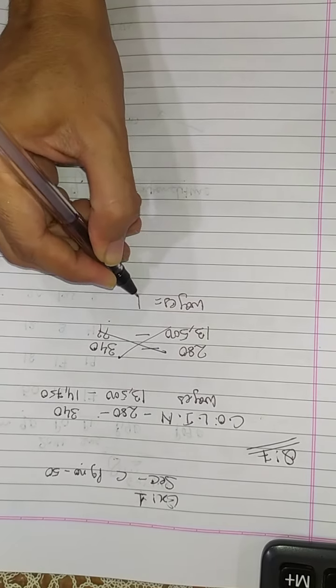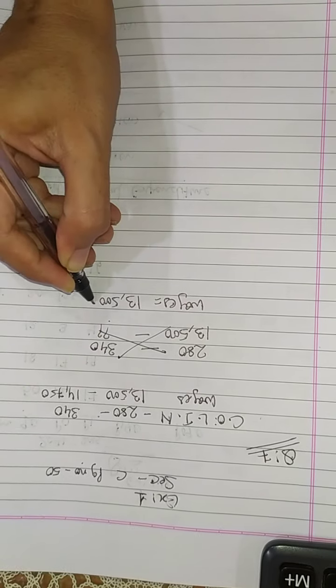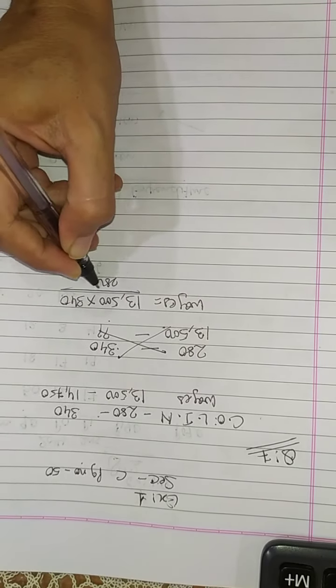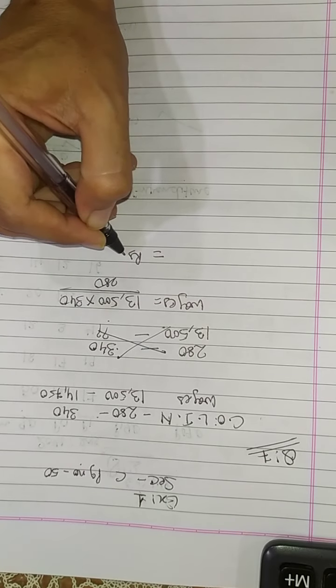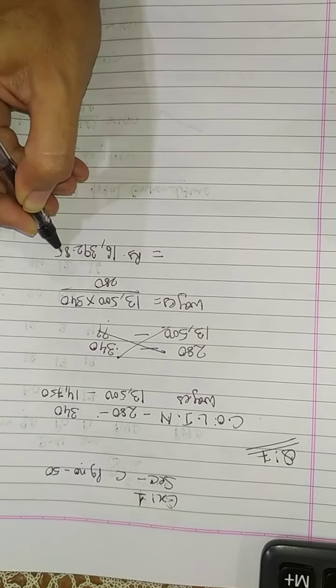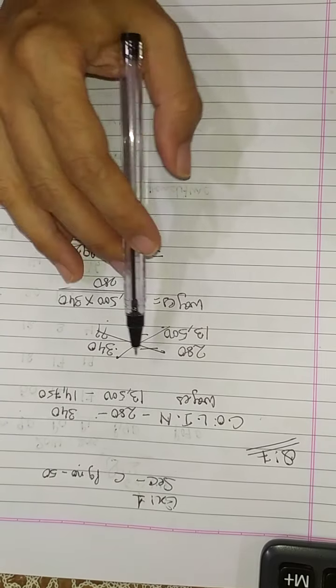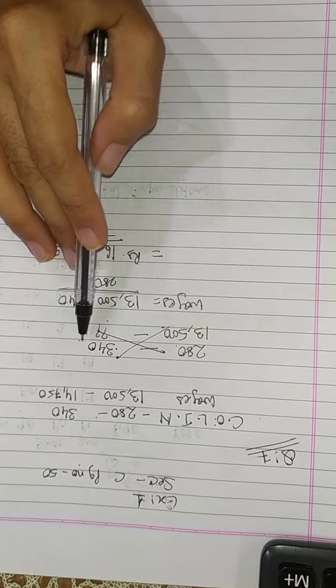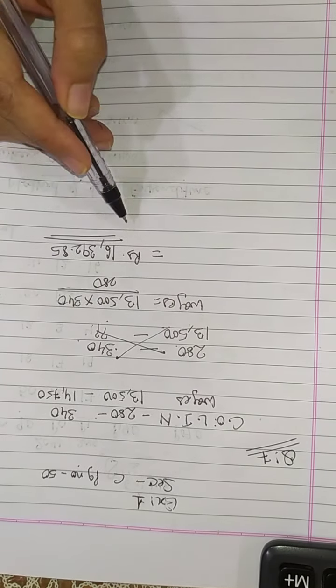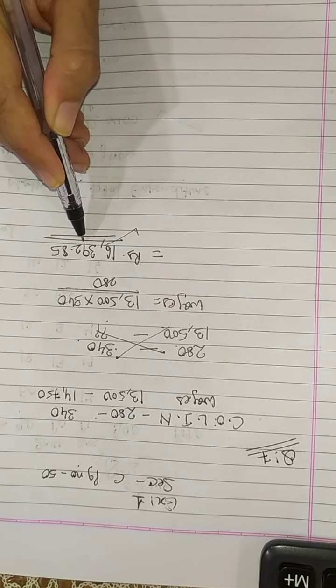Do it cross multiply. So the wages should be, after cross multiplication, the answer will be rupees 16,392.85. Index number is from 280 to 340, so wages should be from 13,500, from this proportional calculation the wages should be 16,392.